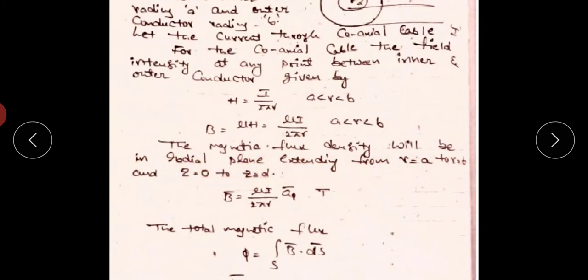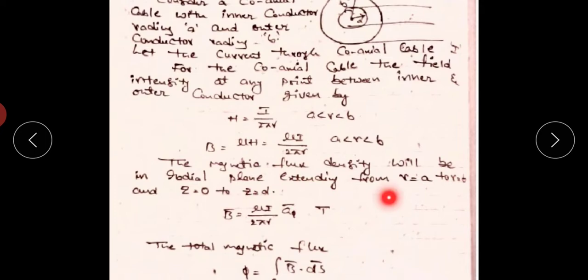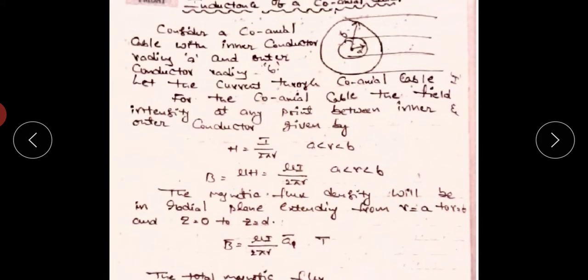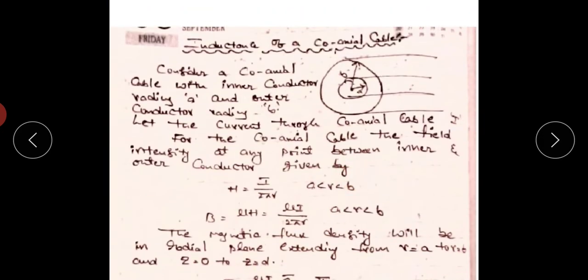The magnetic flux density exists in the radial plane extending from R = a to R = b. The flux density expression is B̄ = μI / 2πR · â_φ. The total magnetic flux φ = surface integral of B̄ · dS̄. The differential surface area normal to the φ-axis in cylindrical coordinates is dS̄ = dR · dZ · â_φ. So φ = integral from Z=0 to d, and R=a to b, of μI / 2πR · dR dZ.